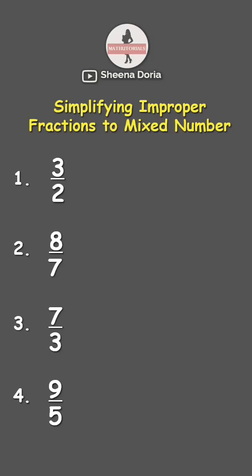How to simplify improper fractions to mixed numbers? Fast and easy. Improper fractions are fractions where numerator is bigger than the denominator. For example, we have 3 over 2.